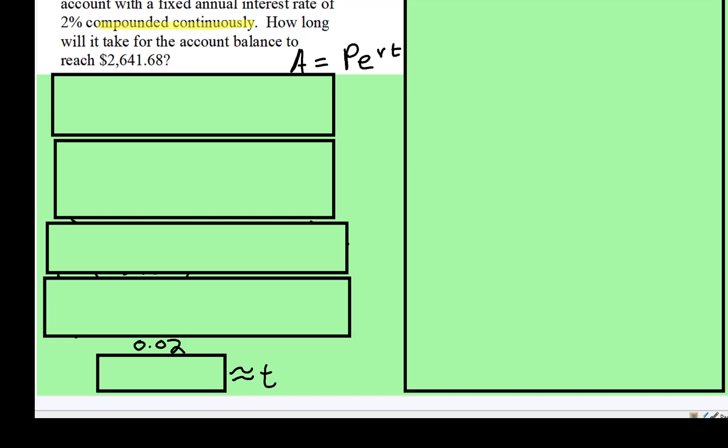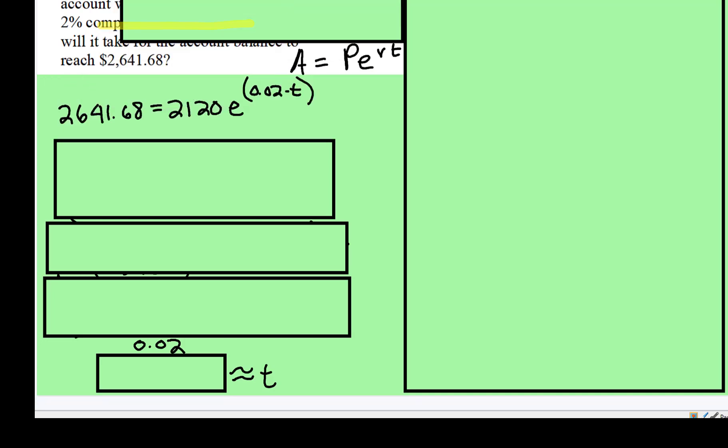So these are a little bit more complex because now you have a missing variable in the exponent. So we're going to fill everything out. Here's our account balance, A, here's our principal, P, and here's our rate.